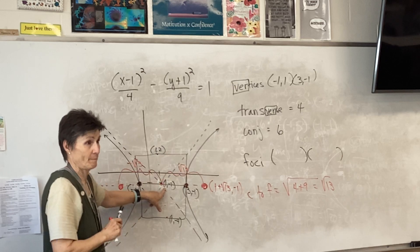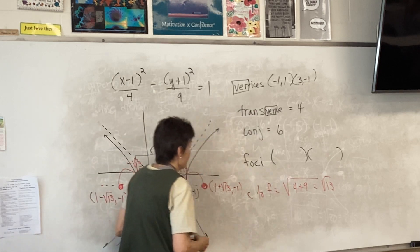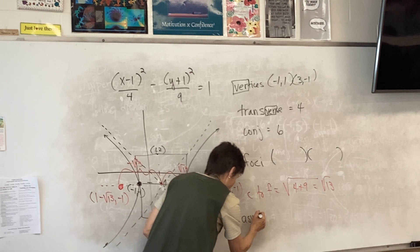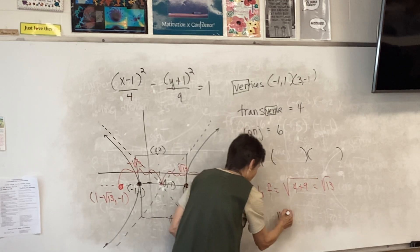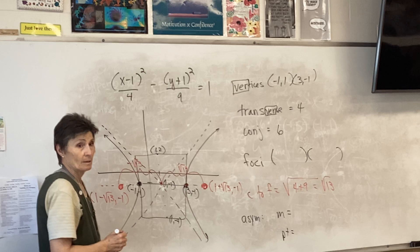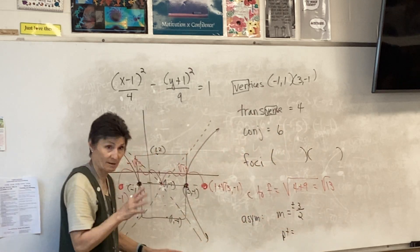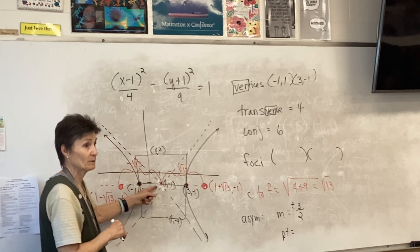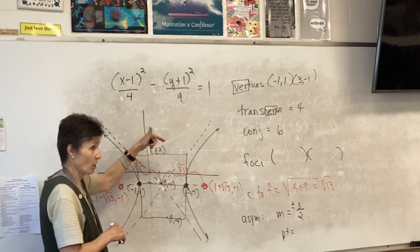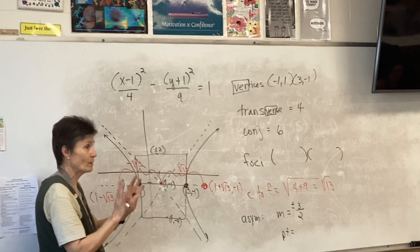Now I need to write the equations of my asymptotes. I need to know the slope. Jacob says the slope is three over two — plus or minus — because I'm going to have a positive one and a negative one. How did he get three over two? Remember how he built the box: he counted up three and over two. Up three, over two — that's rise over run. Positive that way, negative this way — always plus or minus for the slope.